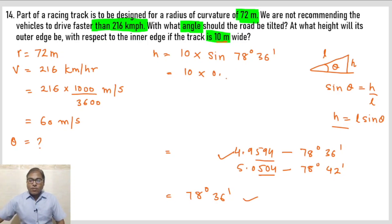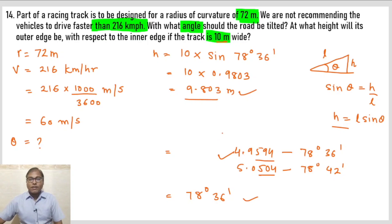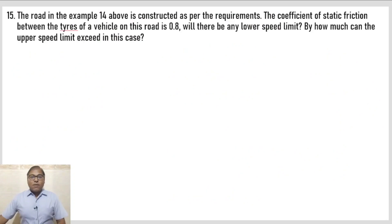Natural sine table mein sin(78°36') ki value dekhte hain: yeh aata hai 0.9803. 10 se multiply karne par h = 9.803 meters. Toh yeh hai hamara height ka answer. Question 14 complete hua.